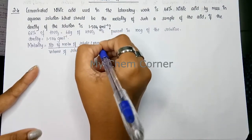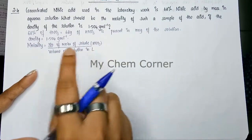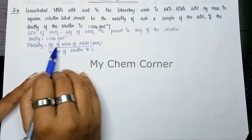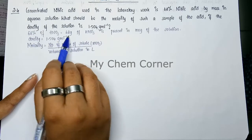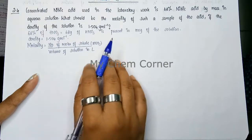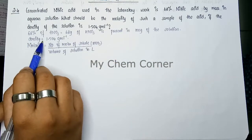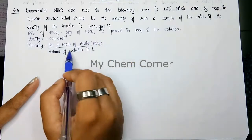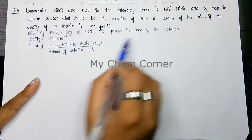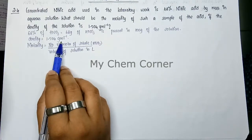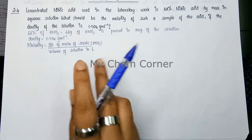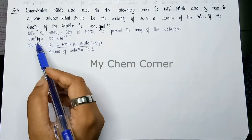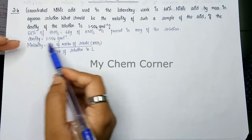In this formula, number of moles is not given directly — we need to calculate it from the given mass. Also, volume of solution in liters is not given; instead, density is given. Using density = mass/volume, with mass = 100 grams, we can find the volume. So we need to calculate two things: number of moles of solute, and volume from density.